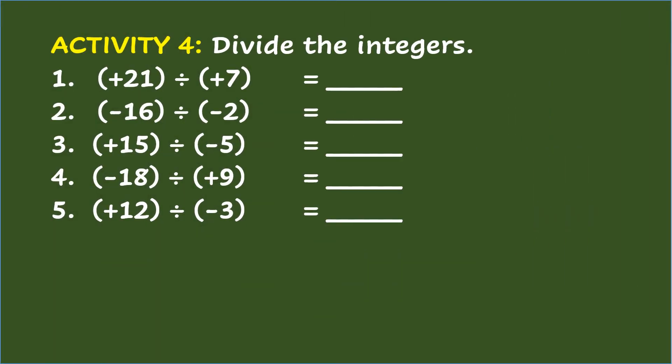Activity 4: Divide the integers. Number 1: Positive 21 divided by positive 7 equals blank. The answer is positive 3. Number 2: Negative 16 divided by negative 2 equals blank. The answer is positive 8. Number 3: Positive 15 divided by negative 5 equals blank. The answer is negative 3. Number 4: Negative 18 divided by positive 9 equals blank. The answer is negative 2. Number 5: Positive 12 divided by negative 3 equals blank. The answer is negative 4.